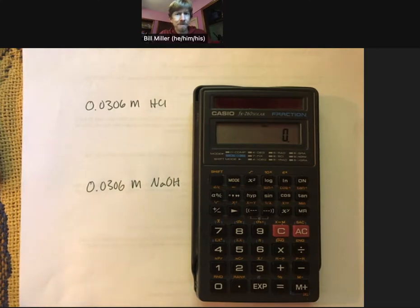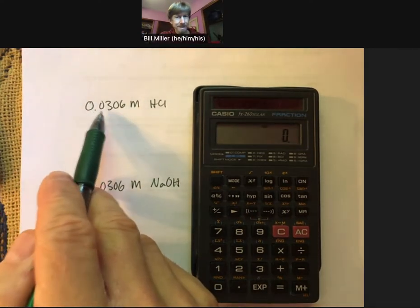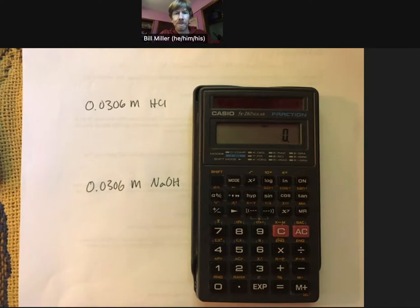I think the issue may be with using your calculator, so I wanted to address that. Let's say, for example, that you had 0.0306 M HCl as the final answer for your pH titration problem.